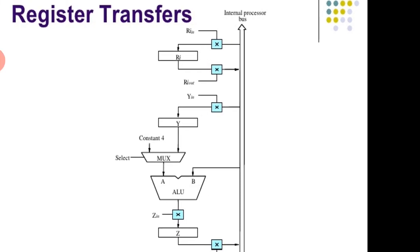An instruction execution involves a sequence of steps. In order to execute an instruction we have to follow some sequence of steps in which data are transferred from one register to another register. For each register, two control signals are used — one to place the content of the register onto the bus, and another to load the data from the bus into the register.